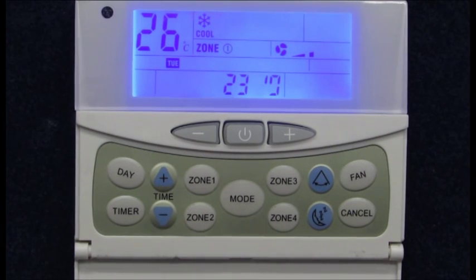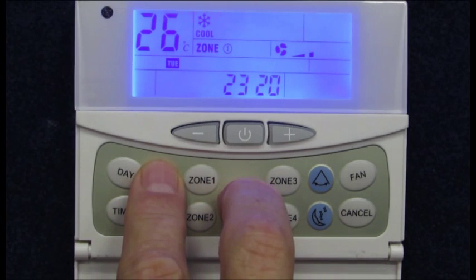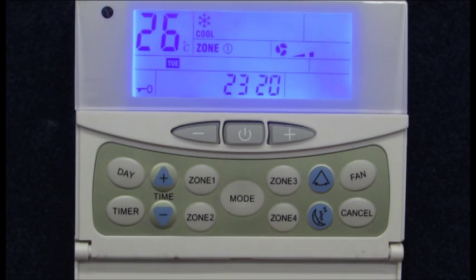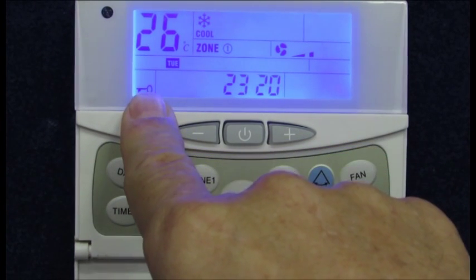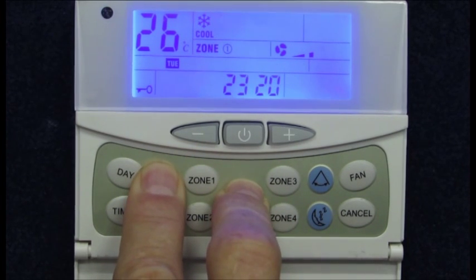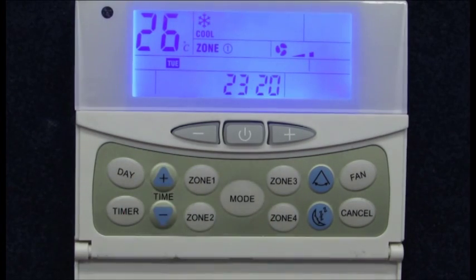If you want to stop people tampering with the settings, then you can apply the key lock function. This is activated by holding down the time plus and mode buttons together for three seconds, and you will see a key displayed indicating the controller is locked. Use the same buttons to unlock. So that's the time plus and mode buttons. Once locked, only the on-off button and the after-hours bypass function previously mentioned can be operated.